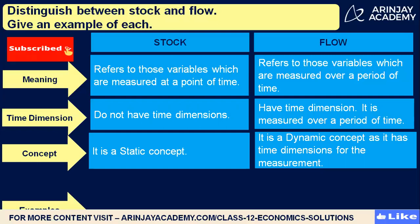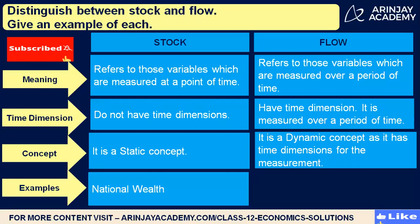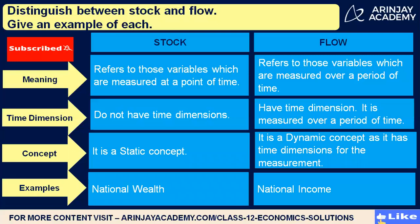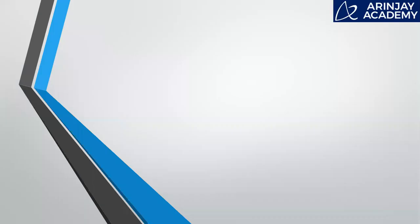Now the examples. If we talk about the examples of stock, then we have national wealth, because it is measured at a point of time. And if we talk about the flow example, then it is national income. So that's it for this question.